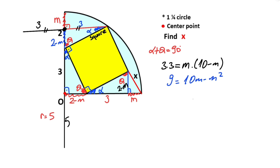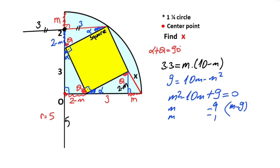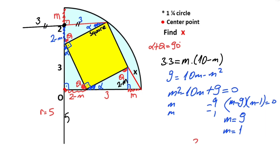Organizing the equation: m squared minus 10m plus 9 equals 0. Factoring gives (m minus 9)(m minus 1) equals 0, so m equals 9 or m equals 1. Which one is valid? Notice that here is 2, and 2 must be greater than m, so m equals 9 is eliminated. Therefore m equals 1.